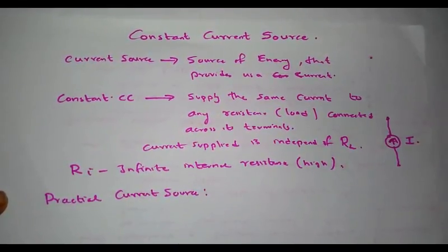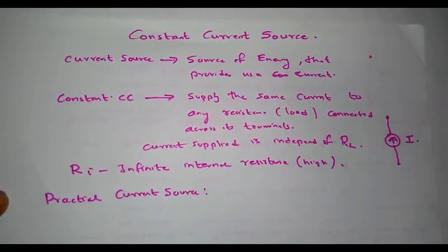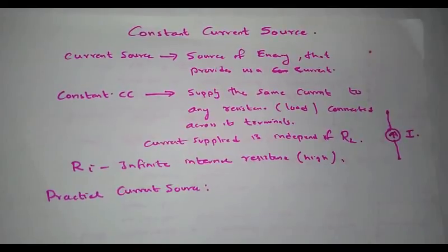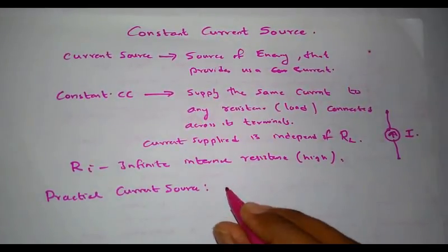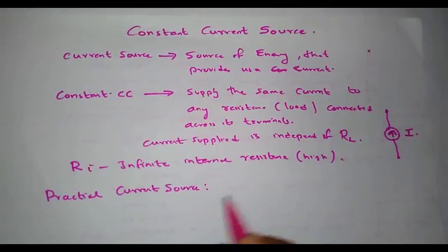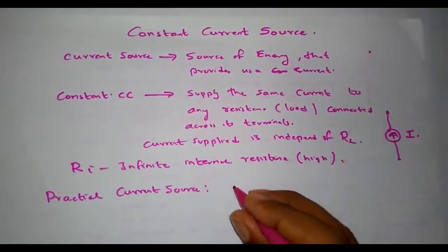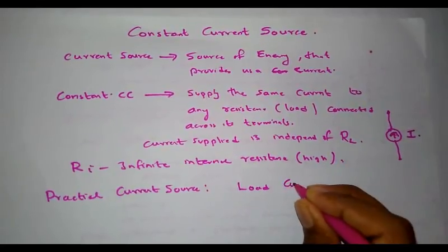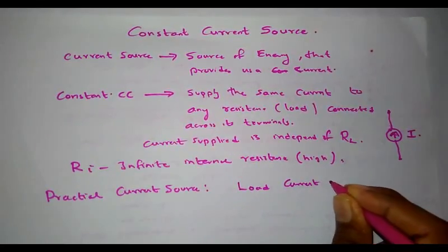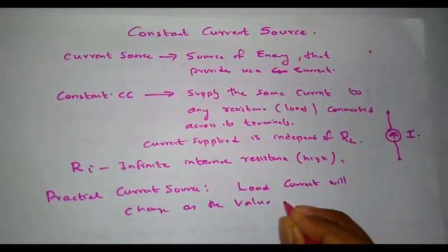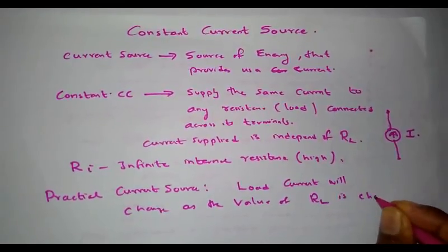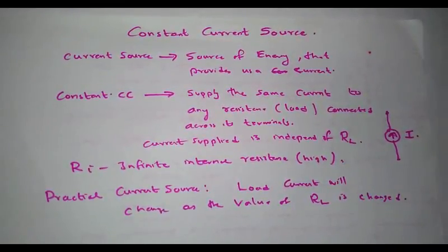The constant current source is also known as an ideal current source, as it describes an ideal condition. For a practical current source, the load current will change as the value of load resistance RL is changed. That is, the current is not constant — it varies with the value of the load resistance.